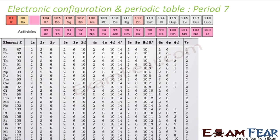Period 7 also has 32 elements. It has one series called the Actinide series, and it also has 32 elements. For all elements in period 7, the electronic configurations have a maximum value of n equal to 7.